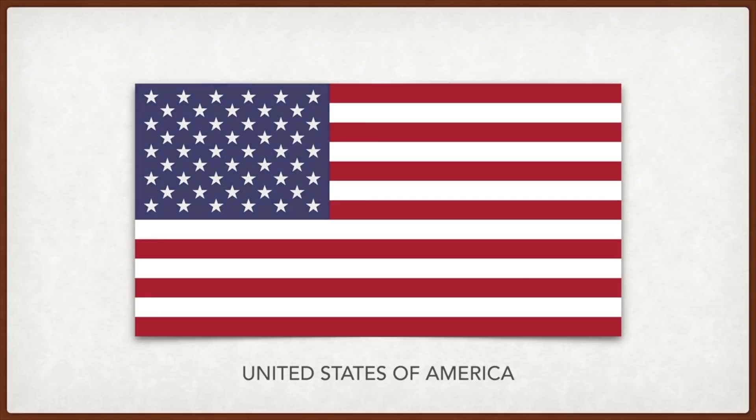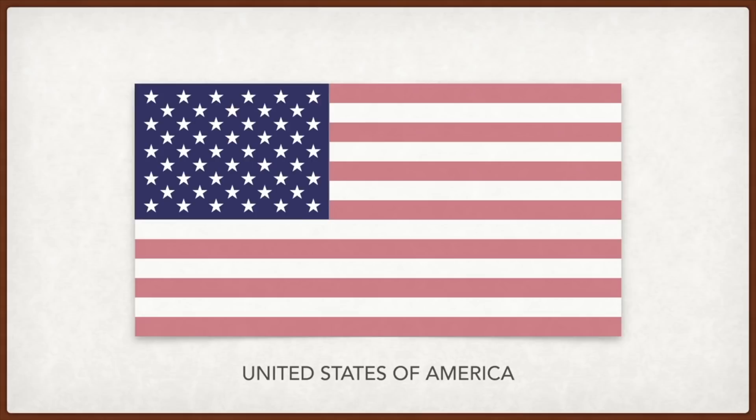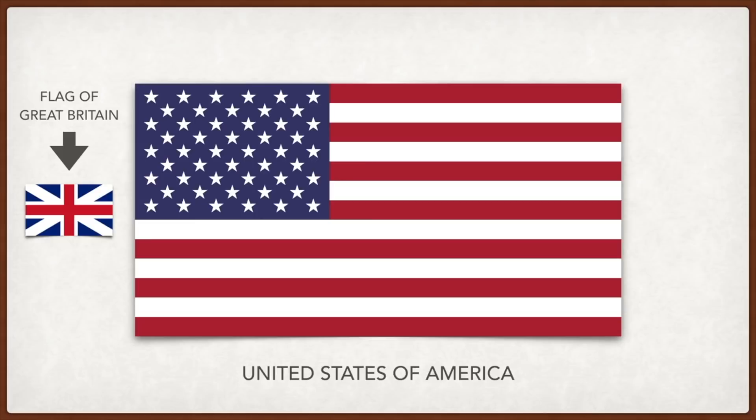The United States: the 13 stripes represent the 13 founding states and the 50 stars the current 50 states. The colors were probably taken from the British flag, and later meaning was attributed to them such as courage, purity, and justice.